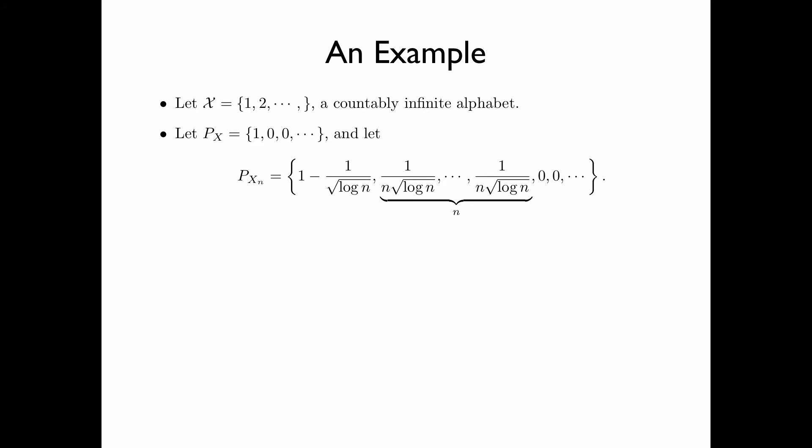It is easy to see that as n tends to infinity, P_X^n tends to P_X because the first probability mass tends to one and the n following probability masses all tend to zero. So as n tends to infinity, the variational distance between P_X and P_X^n, which can be evaluated to 2 divided by square root log n, tends to zero.